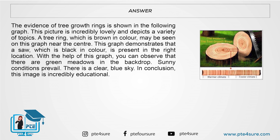The evidence of tree growth rings is shown in the following graph. This picture depicts a variety of topics. A tree ring, which is brown in color, may be seen on this graph near the center. This graph demonstrates that a saw, which is black in color, is present in the right location.